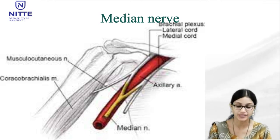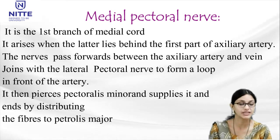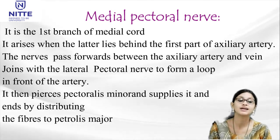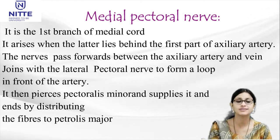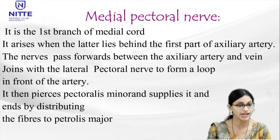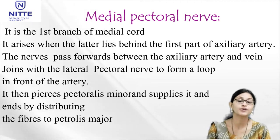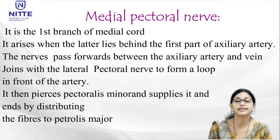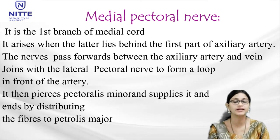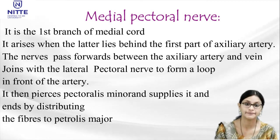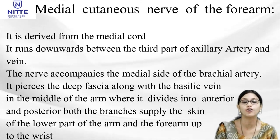The medial pectoral nerve is the first branch of the medial cord, arising when it lies behind the first part of axillary artery. The nerve passes forwards between the axillary artery and vein, joins with the lateral pectoral nerve to form a loop of communication in front of the first part of axillary artery, then pierces and supplies pectoralis minor and ends by supplying pectoralis major.